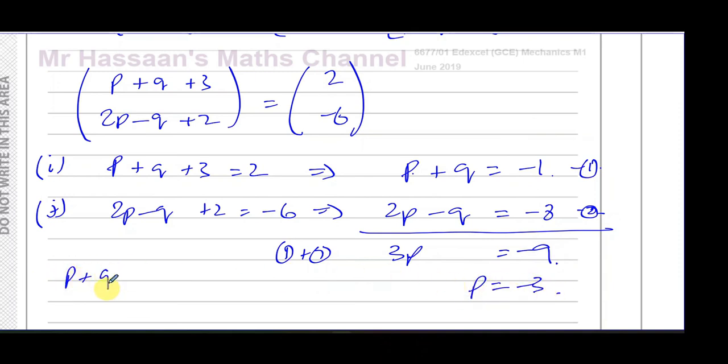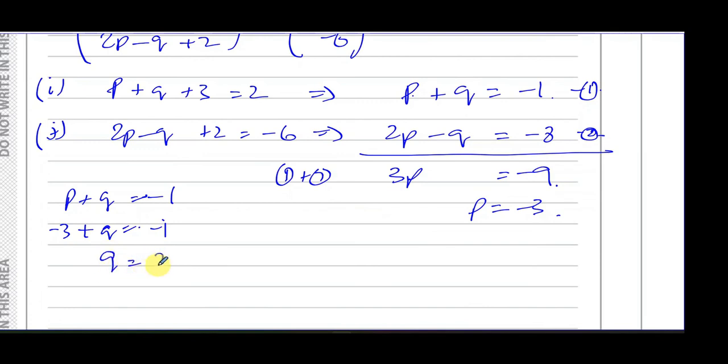And I know that p + q equals -1. I can replace the p with -3. -3 + q equals -1. Be careful - p + q equals -1. So you add 3 to both sides. -1 + 3 equals 2. So you end up with q is equal to -1 + 3, which is equal to 2.